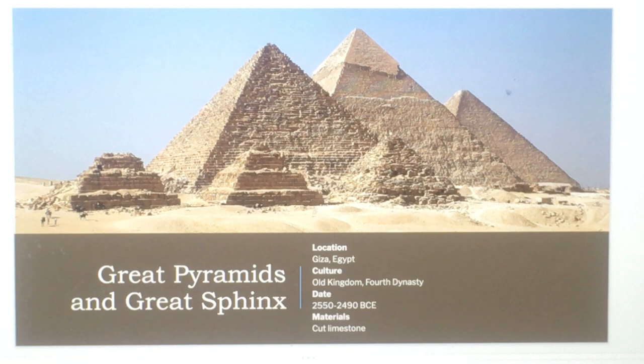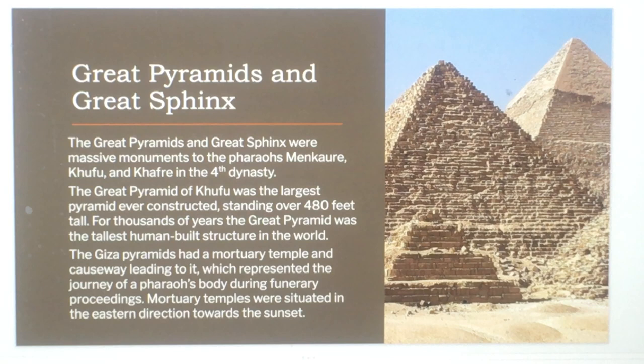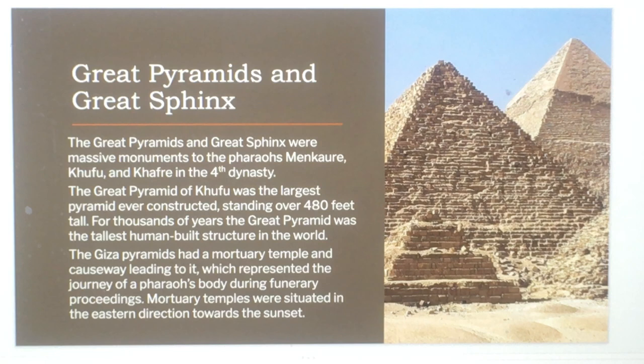The Great Pyramids and the Great Sphinx were massive monuments to the pharaohs Menkaure, Khufu, and Khafre in the Fourth Dynasty. The Great Pyramid of Khufu was the largest pyramid ever constructed, standing over 480 feet tall. For thousands of years, the Great Pyramid was the tallest human-built structure in the world.